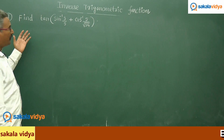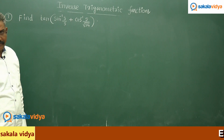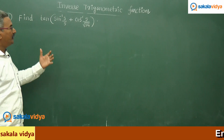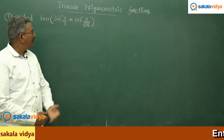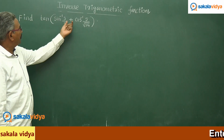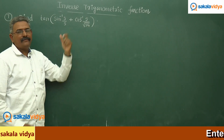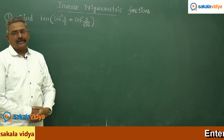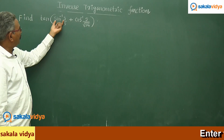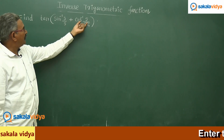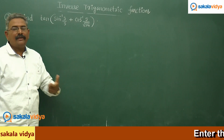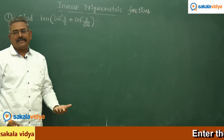Let us move to the next problem. We are asked to find out the tan of sin inverse 3 by 5 plus cos inverse 5 by root 34. Suppose we say this is alpha and this is beta, then we need to find out tan of alpha plus beta.